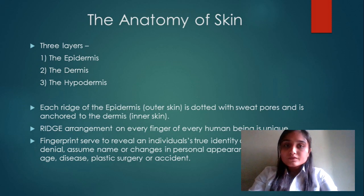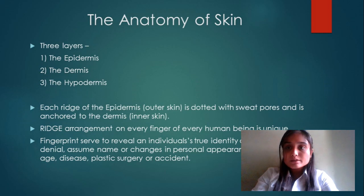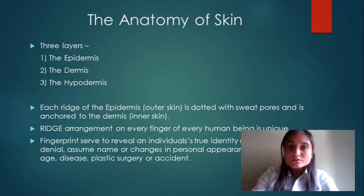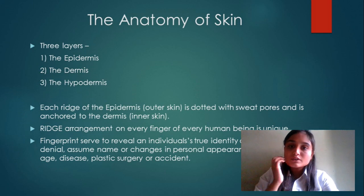The anatomy of the skin: the palms, hands, and fingers are formed from different layers of skin — mainly three layers: the epidermis, dermis, and hypodermis. Each ridge of the epidermis, the outer skin, is dotted with sweat pores and is anchored to the dermis. The pores are anchored from the dermis. The ridge arrangement on every finger of every human being is unique, and fingerprints serve to reveal individual identity.